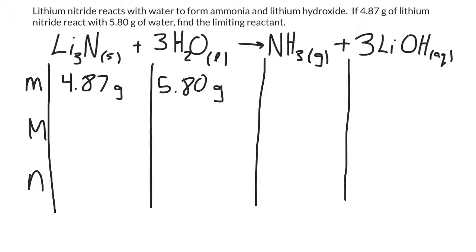I can also use my periodic table to calculate the molar mass of lithium nitride. It ends up being 34.83 grams per mole, because there are three lithiums — each lithium has a mass of 6.94 — and one nitrogen with a mass of 14.01.